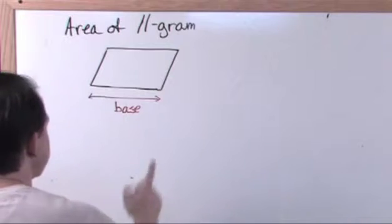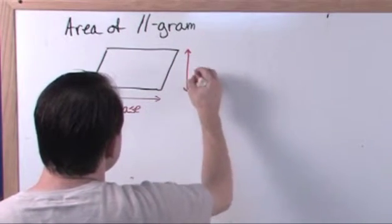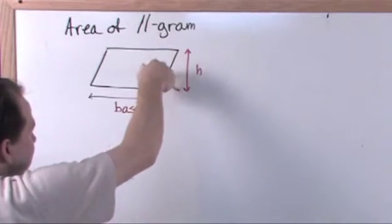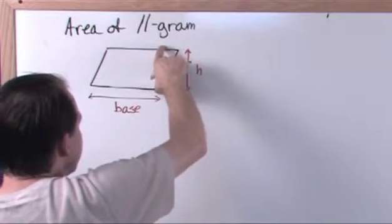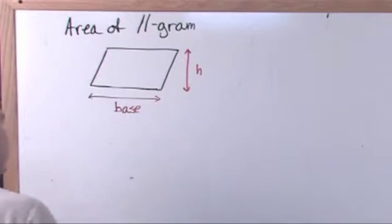And the height, this is something very, very important. The height is this vertical distance here. It is not this slanted distance here, it is the vertical height of the parallelogram here, like this, but it is not this slanted height. That is the definition of h in the parallelogram world.